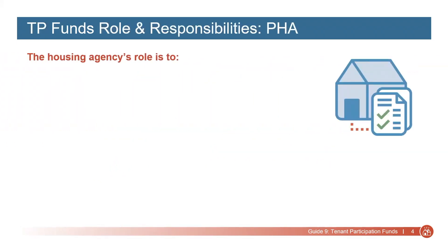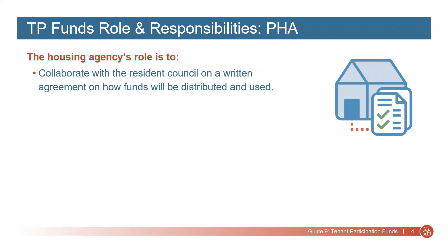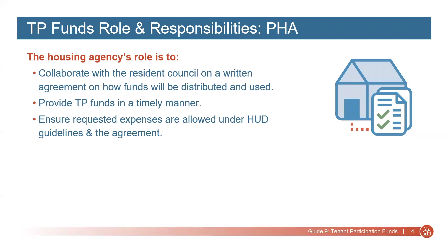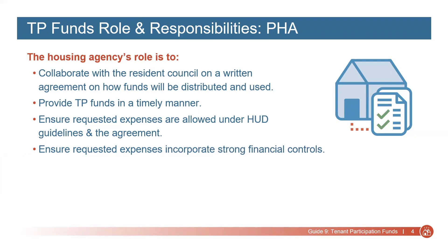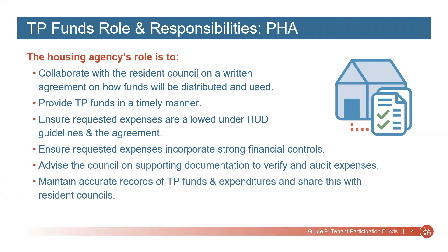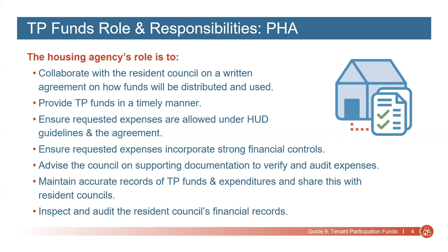The Housing Agency's role with regards to Tenant Participation Funds is to collaborate with the Resident Council on a written agreement on how funds will be distributed and used; provide TP Funds to the Resident Council in a timely manner; ensure requested expenses are allowed under HUD Guidelines and the Agreement; ensure requested expenses incorporate strong financial controls; advise the Resident Council on supporting documentation needed to verify and audit expenses; maintain accurate records of TP Funds and expenditures and share this with Resident Councils; and inspect and audit the Resident Council's financial records.